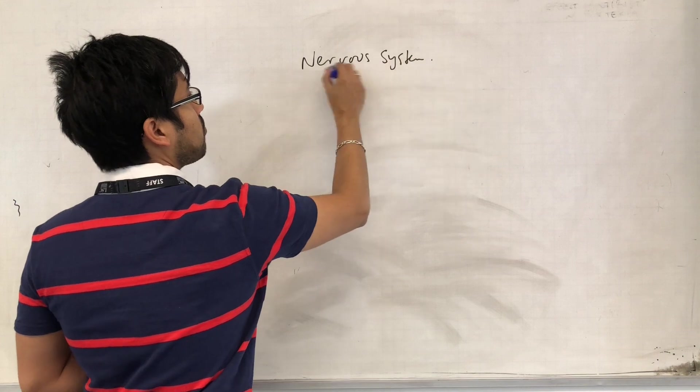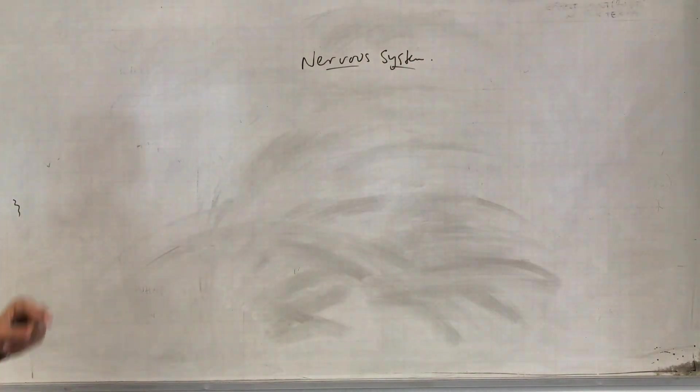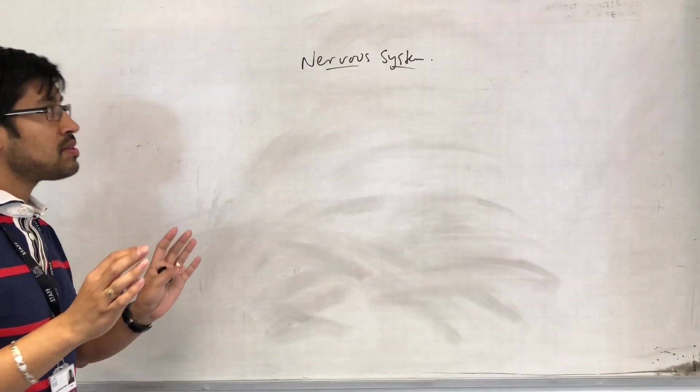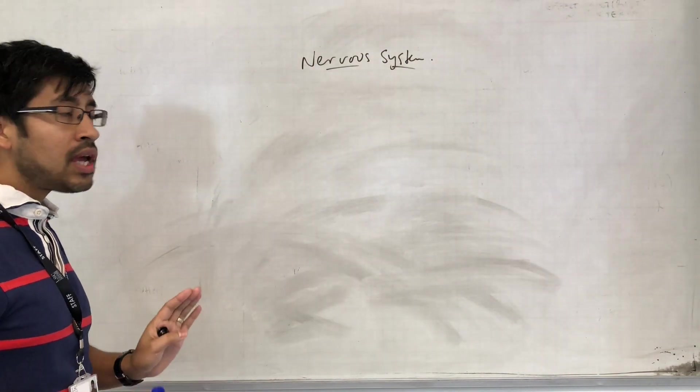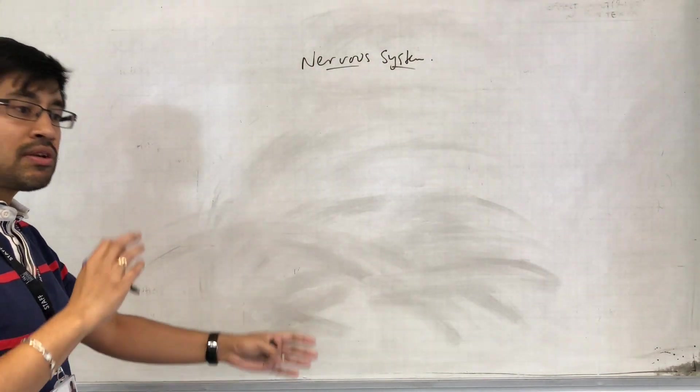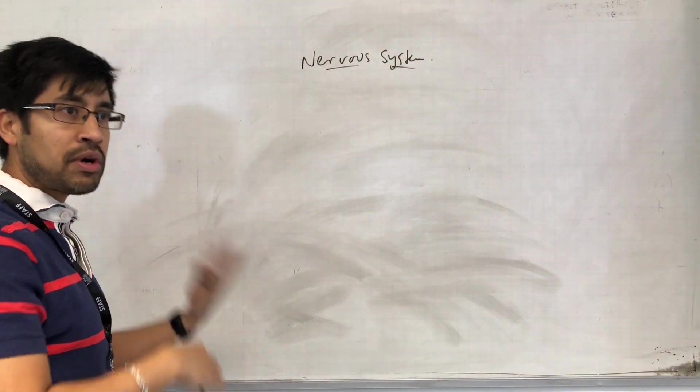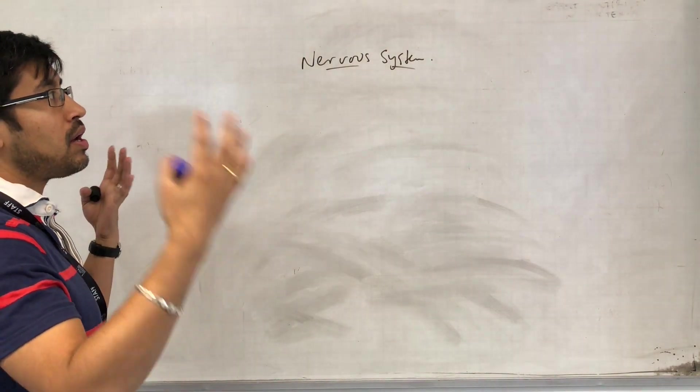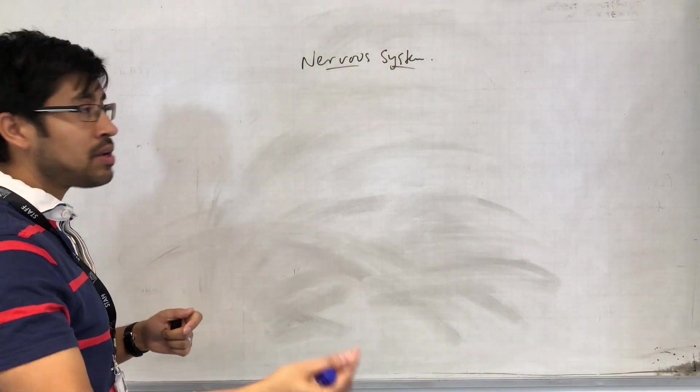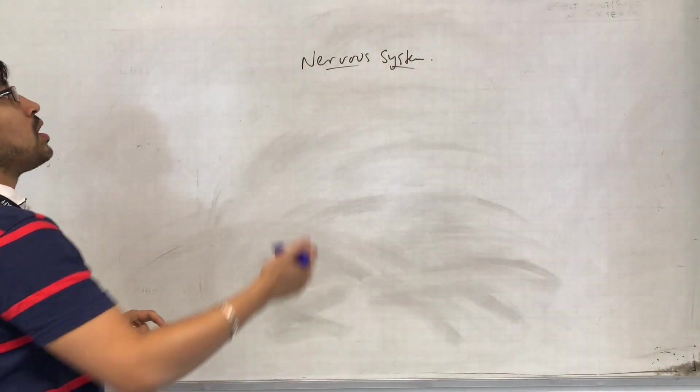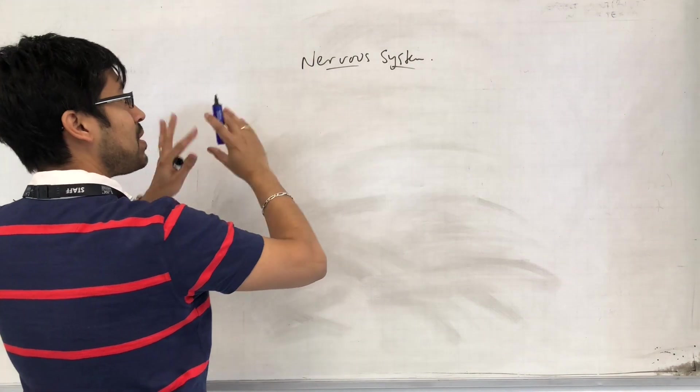If we're thinking about the nervous system, we're thinking about all the neurons inside your body that allow communication and coordination between different parts of the body - muscles, brain to muscles, central nervous system to endocrine glands, and so on. The nervous system is basically everything.